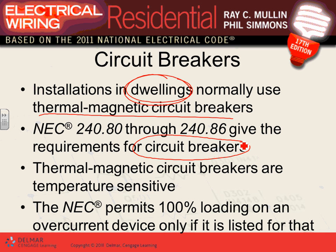Because circuit breakers have a thermal component, they are temperature-sensitive. If you put a circuit breaker in an area that's really hot — say 105 degrees — expect the circuit breaker to malfunction. They'll give you nuisance tripping if the temperature is higher than normal, not because you're pulling more current, but because they're too sensitive to heat.